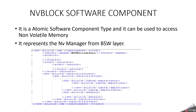NV block software component is also an atomic software component type and it is used to access non-volatile memory. You can read the block or write the block, get the error status of the block, and know whether a job is finished or not — all communicated via the NV block software component. It can represent the NV manager from the BSW layer. It is identified by the tag NV block software component type, and it has ports, port groups, NV block descriptors, and NV block needs. The key point to remember: NV block software component is mainly used to access non-volatile memory.